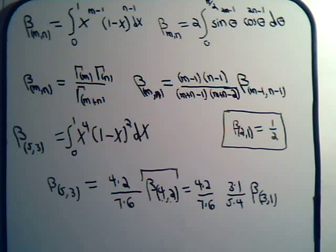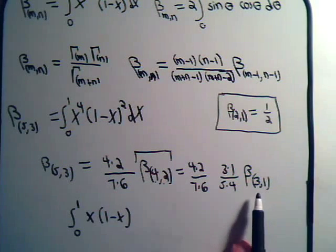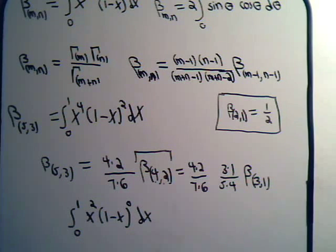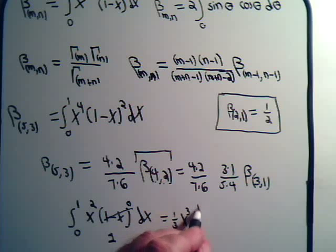We can't reduce beta(3,1) any further because that would give a 0 in the coefficient. In integral form, beta(3,1) equals the integral from 0 to 1 of x squared times (1 minus x) to the 0 power dx, and since (1 minus x)⁰ = 1, this simplifies to the integral of x squared dx, giving 1/3 x cubed from 0 to 1, so beta(3,1) = 1/3.